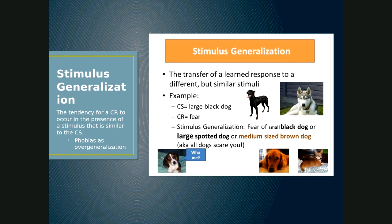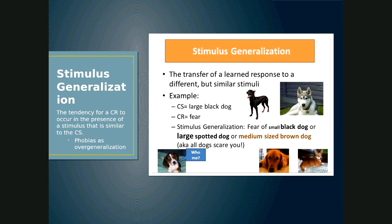The purpose of classical conditioning is for you to predict your environment — to look at stimuli and predict what comes next. This would not be helpful if you only developed a conditioned response to one particular stimulus. So we tend to generalize, meaning we have a conditioned response to other stimuli similar to the original CS. For example, if you are bitten by a Rottweiler and you have stimulus generalization, you may develop a fear not only of Rottweilers but of Dobermans or any other large black dog.